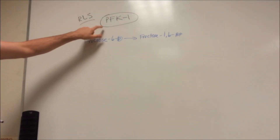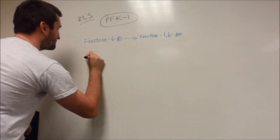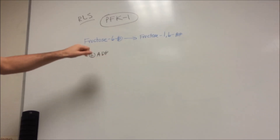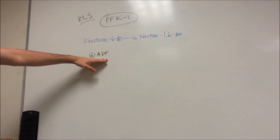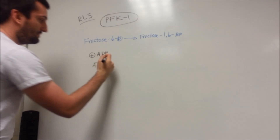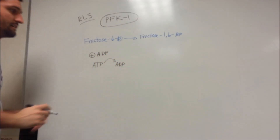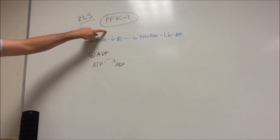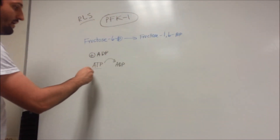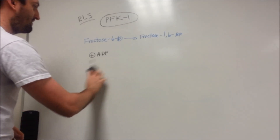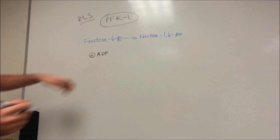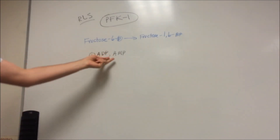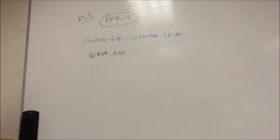What stimulates PFK1? ADP. If the body has a lot of ADP — adenosine diphosphate — that's not usable energy; ATP is. So high ADP means the body used up its ATP and doesn't have much energy anymore. High ADP will stimulate the PFK1 enzyme to drive glycolysis and create more ATP. Likewise, AMP — adenosine monophosphate — is even worse in terms of energy deficit, and both ADP and AMP will stimulate phosphofructokinase 1.